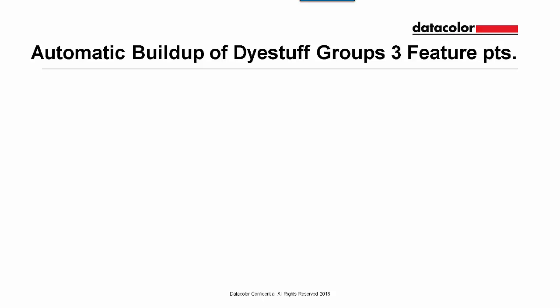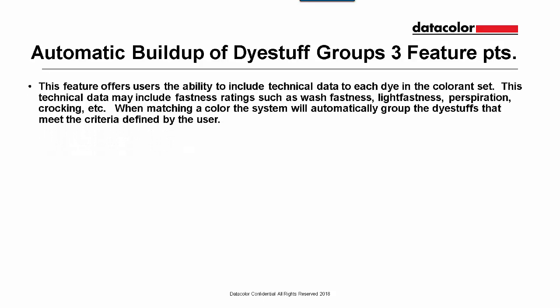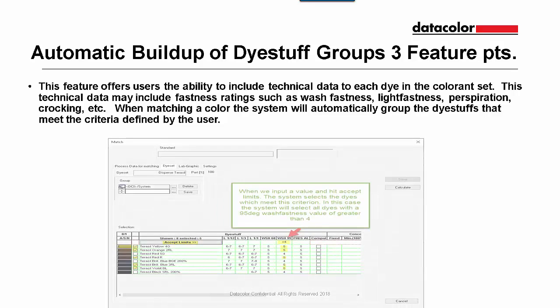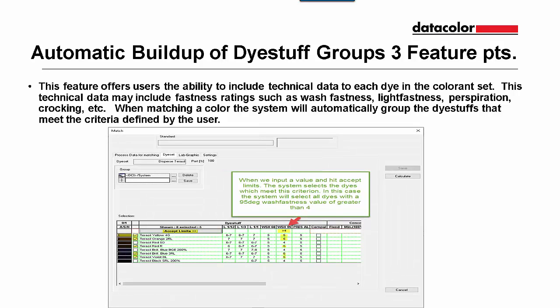The option automatic buildup of dye stuff groups is worth three feature points. This feature allows the user to include technical data such as wash fastness, light fastness, or perspiration fastness data. When matching a color, the system will automatically group dye stuff that meet the criteria defined by the user. In the example, the user puts in a value of greater than 4 for 95 degree wash fastness. When we hit accept limits, the system selects the dyes with a value above 4 for this criteria.